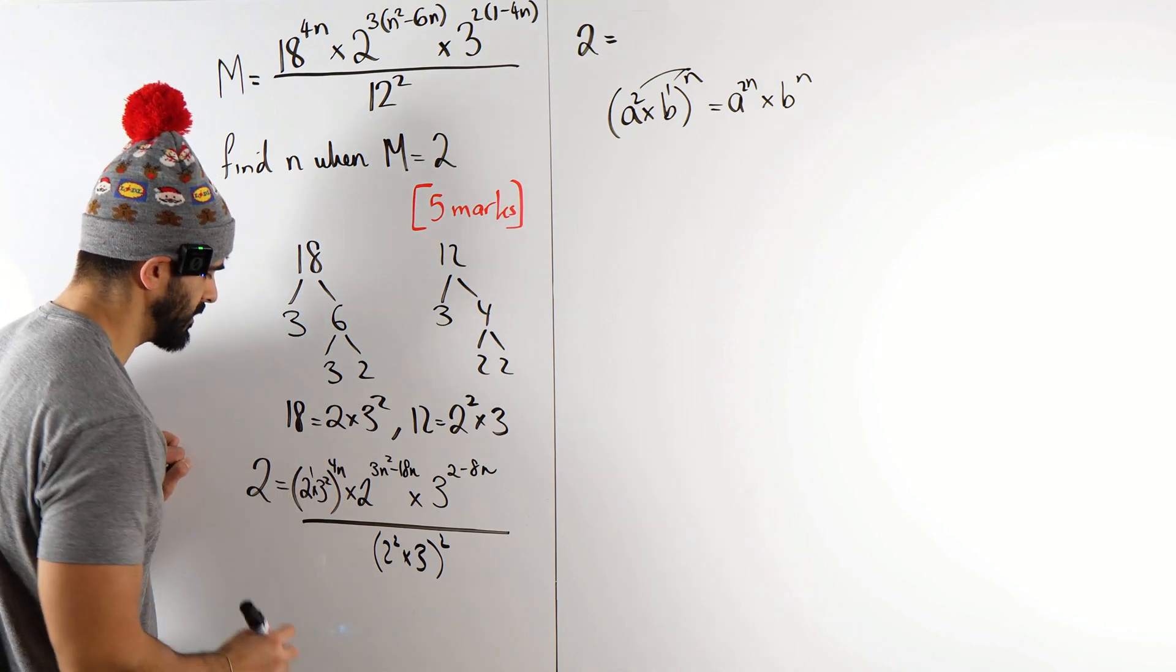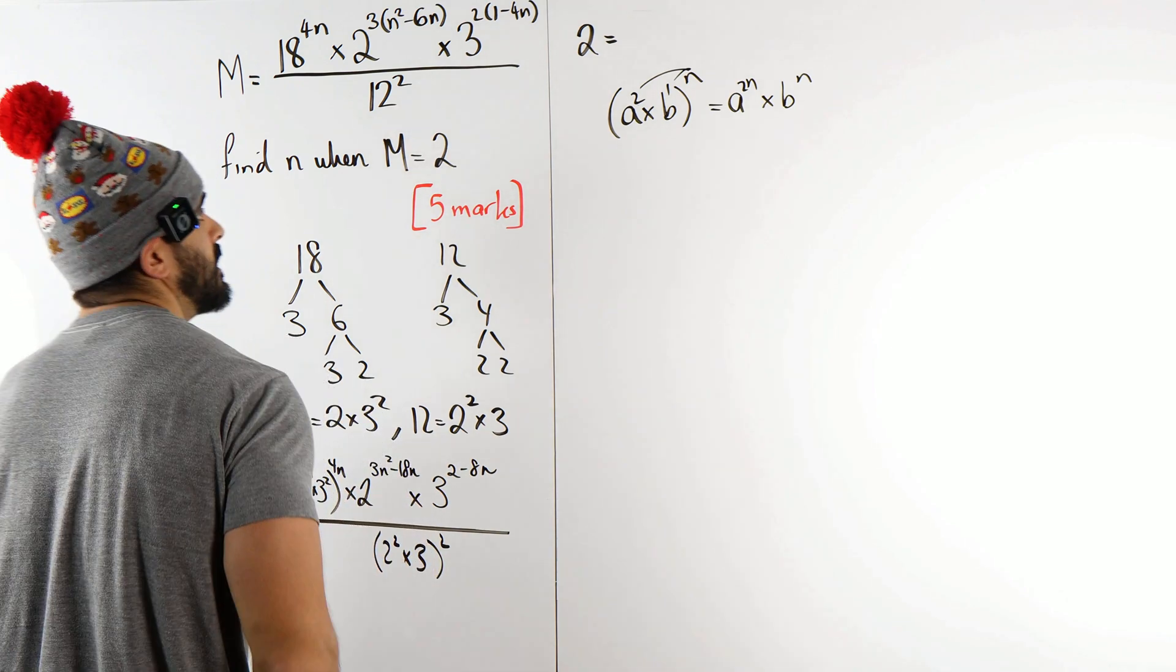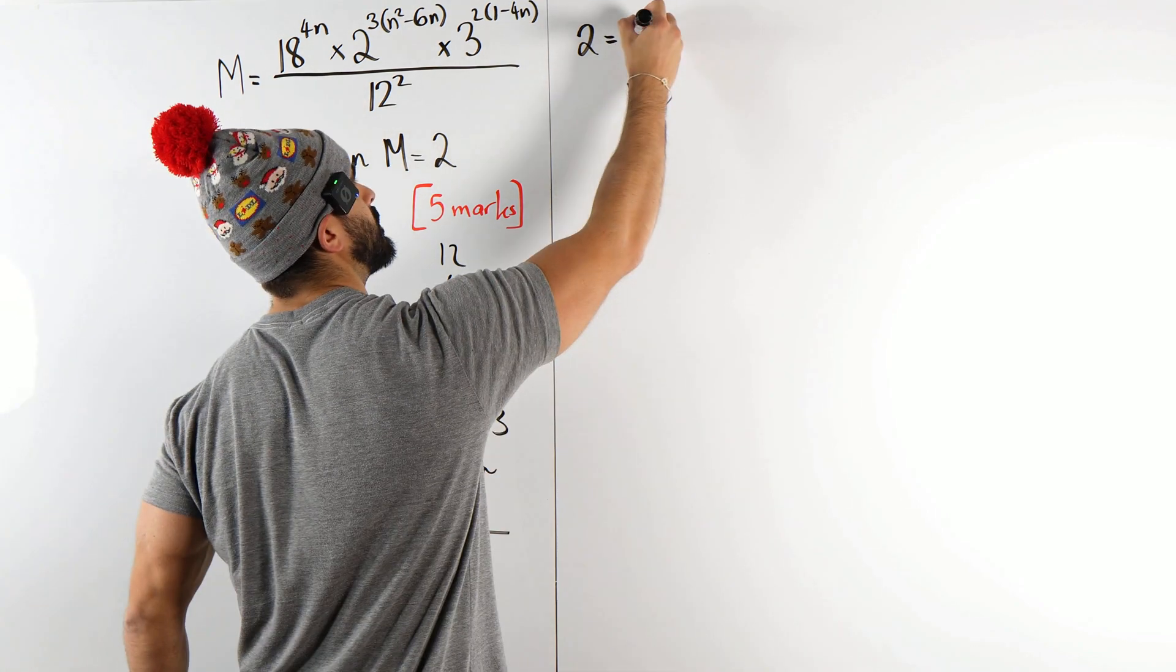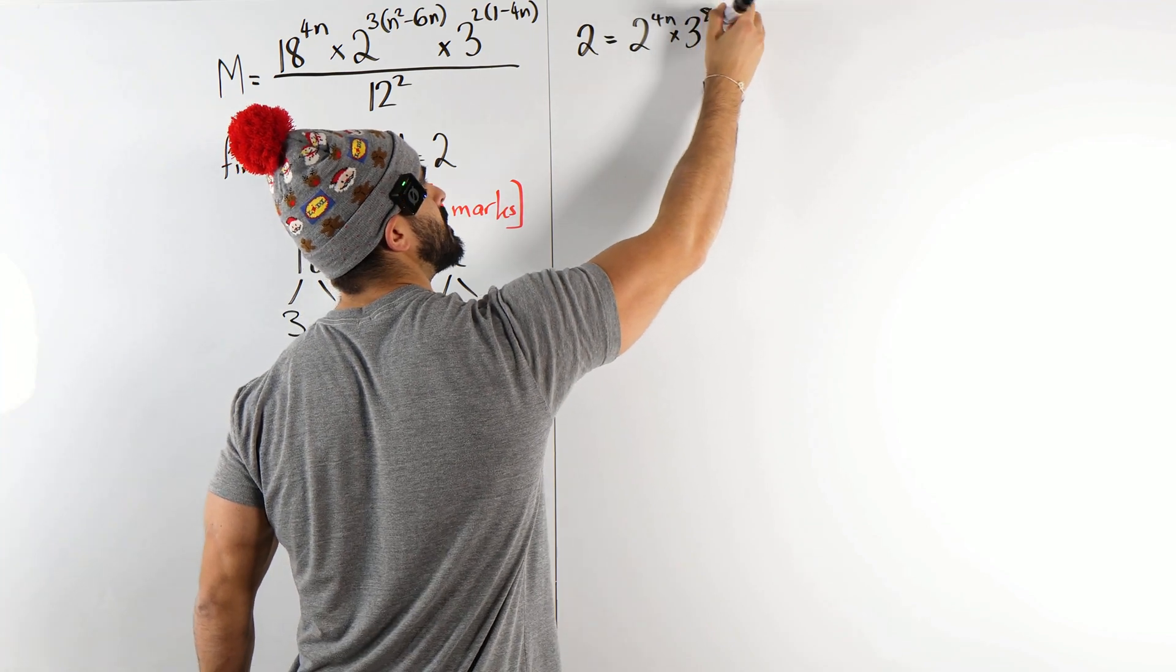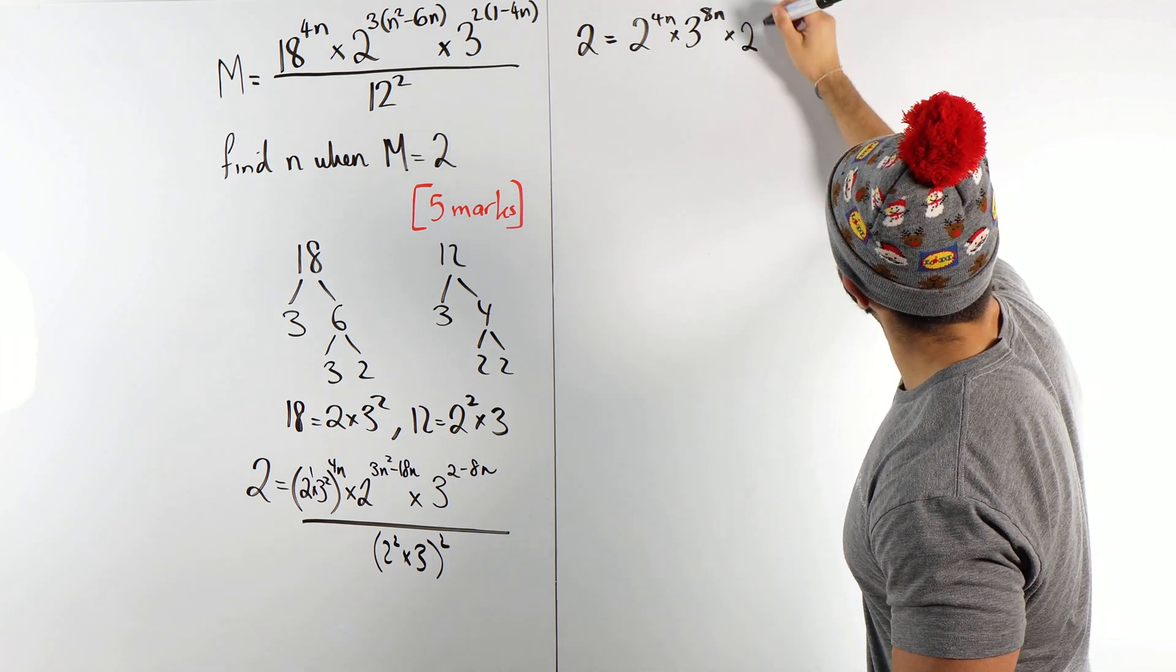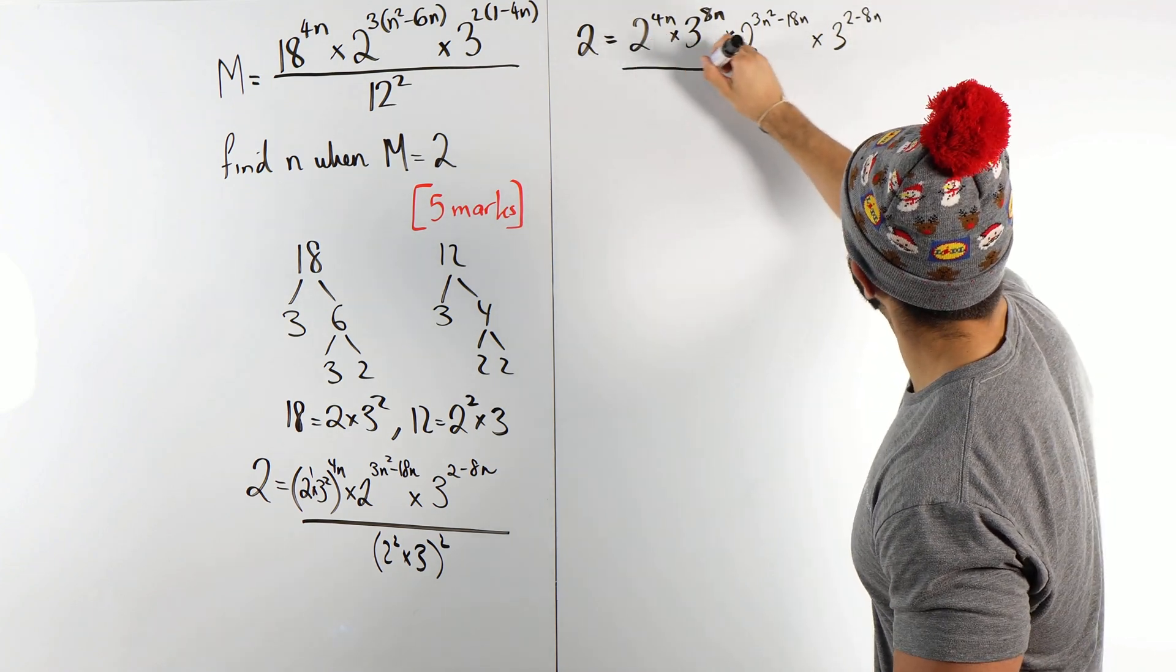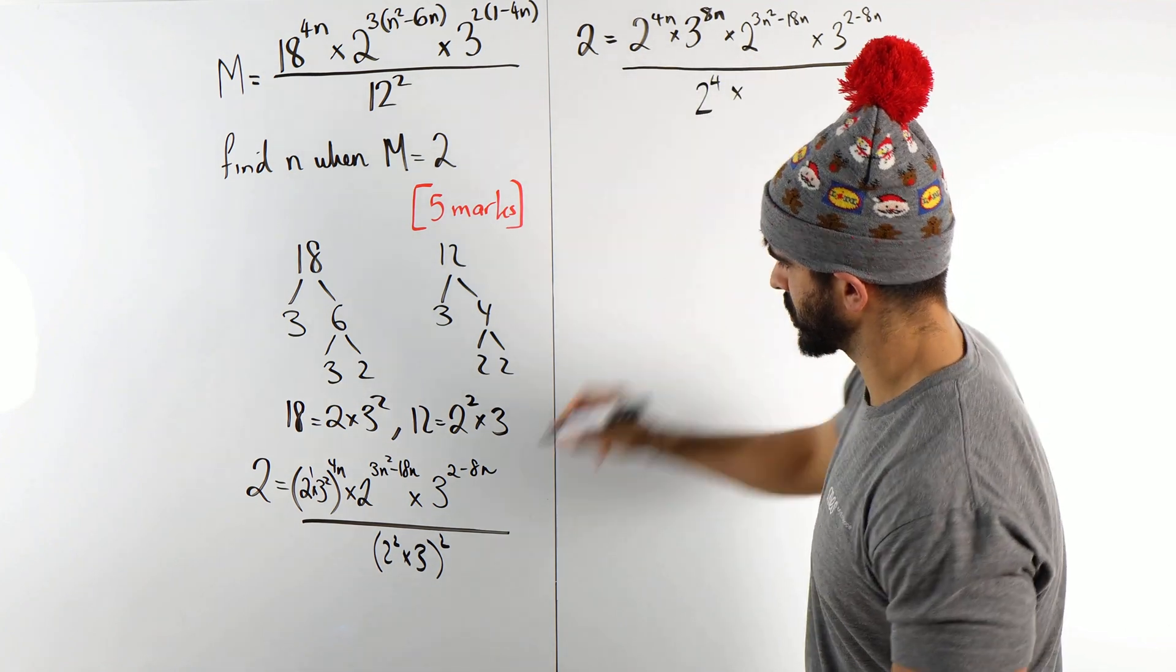So in this case, I have 2 to the power of 4n, because remember that's power of 1. 1 times 4n is 4n. But here, that 3 squared, I'm going to have to multiply these to distribute that power. What are we left with? 2 to the power of 4n times 2 times 4n is 8n. So 3 to the power of 8n times 2 to the power of all this, 2 to the power of 3n squared minus 18n times 3, 2 minus 8n. All divided by, here again, we're distributing that power. So 2 times 2 is 4, we get 2 to the power of 4 times just 3 squared.